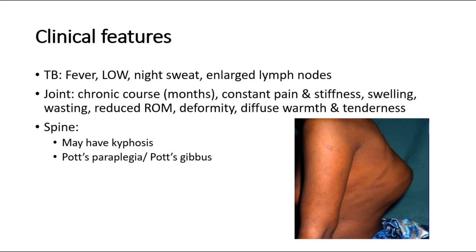Since the spine is the most common site of TB arthritis, features may include kyphosis, a long history of ill health and backache, and local tenderness. There can also be Pott's paraplegia, where there is compression of the spinal cord by soft inflammatory material such as abscess, caseous mass, or granulation tissue, or by hard solid material such as bony sequestrum or a ridge of bone at the kyphos. The vertebra may collapse, causing a Pott's gibbus, usually at the thoracic region of the spine.